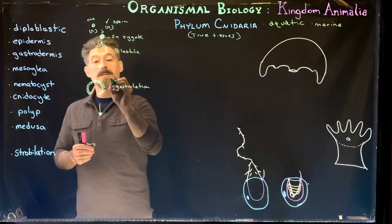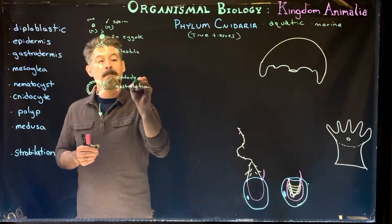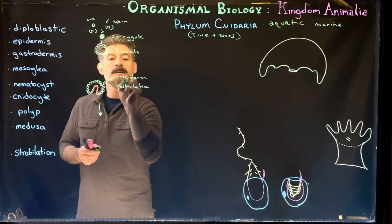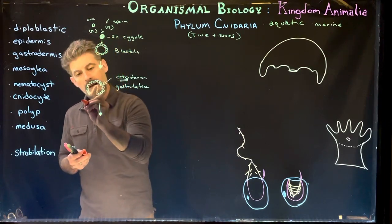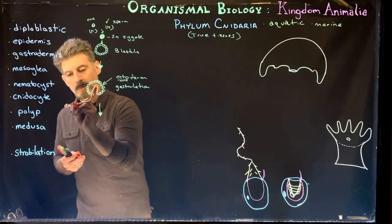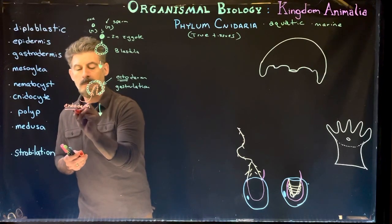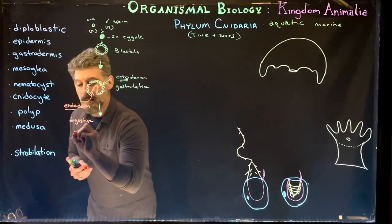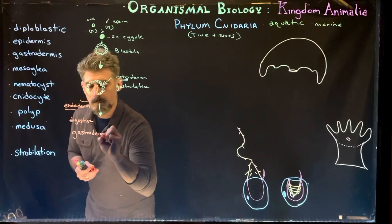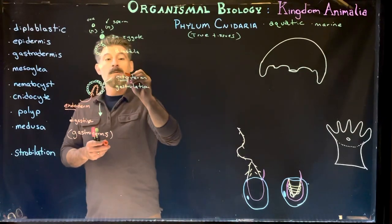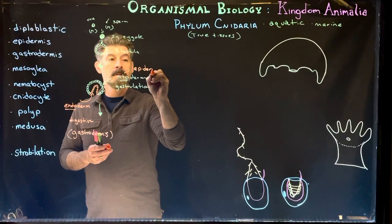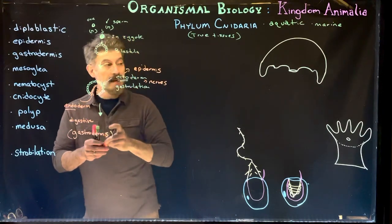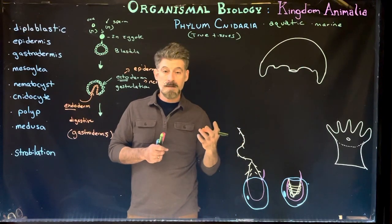Gastrulation produces real tissue formation. We have the endoderm — as cells move inward that is the endoderm — and the outer layer is the ectoderm. The endoderm forms the digestive tract, called the gastrodermis in this group. The ectoderm forms the skin, or in this case the epidermis. Ectoderm can also give rise to nerve cells, and cnidarians will have a very primitive nervous system — no brain, but they do have nerves.